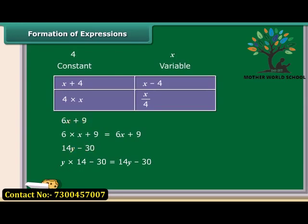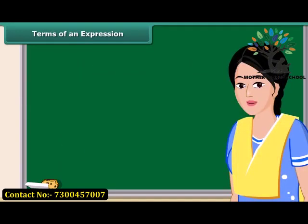You can also obtain expressions by combining variables with themselves or with other variables. Now we will discuss what terms of an expression and their factors are. Consider the expression 9X plus 4. In forming this expression, we first formed 9X separately as a product of 9 and X and then added 4 to it. So, you have seen these expressions have parts which are formed separately and then added. We call these parts as terms.